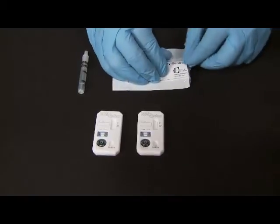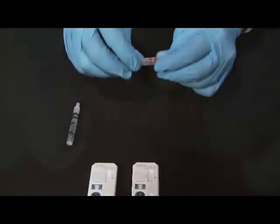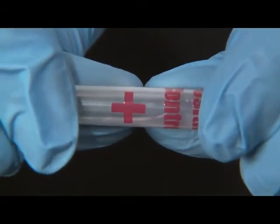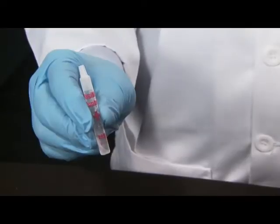Tear open the positive control vial foil pouch and remove the vial. Gently bend or squeeze the vial, breaking the glass ampule inside. Mix the buffer with the lyophilized positive sample until it is completely dissolved.